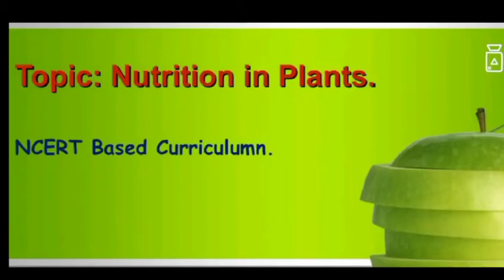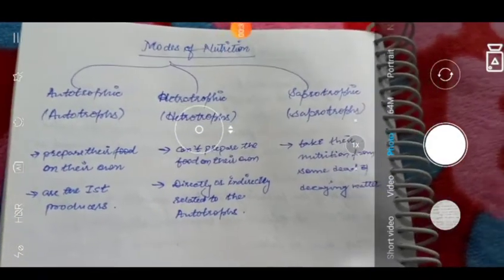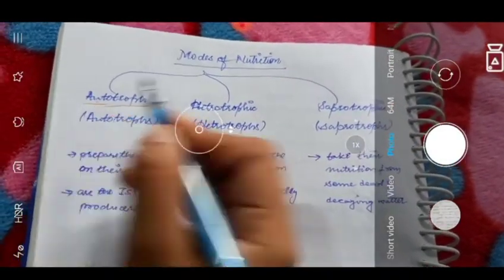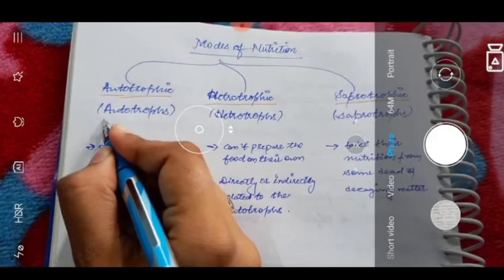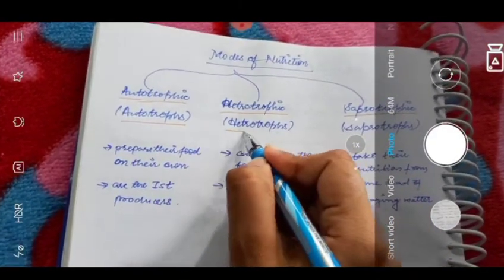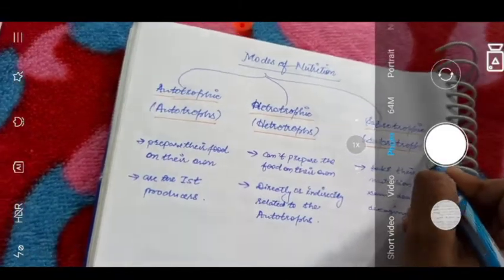Hello students, greetings of the day and welcome to the continued session of Nutrition in Plants. In our previous session we were discussing the different modes of nutrition. Let me recapitulate: we studied three types of nutrition — autotrophic, heterotrophic, and saprotrophic. In autotrophic mode we have autotrophs; in heterotrophic mode, heterotrophs; and in saprotrophic nutrition, saprotrophs.